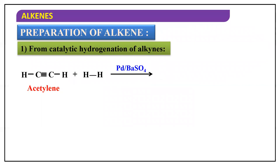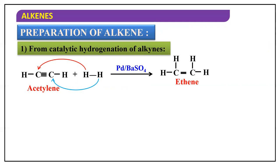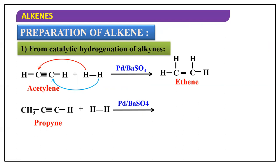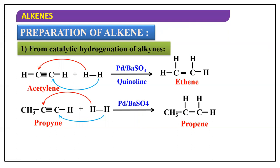For example, acetylene reacting with hydrogen in the presence of palladium and barium sulfate gives us ethene. Starting with propyne in the presence of hydrogen, palladium barium sulfate, and quinoline, we get propene as the product. Note: in the slide there is a missing double bond in propene — ensure you write it correctly in your notes. These are examples of alkynes converted to alkenes in the presence of Lindlar's catalyst, which is composed of palladium in barium sulfate with quinoline, lead, or sulfur.